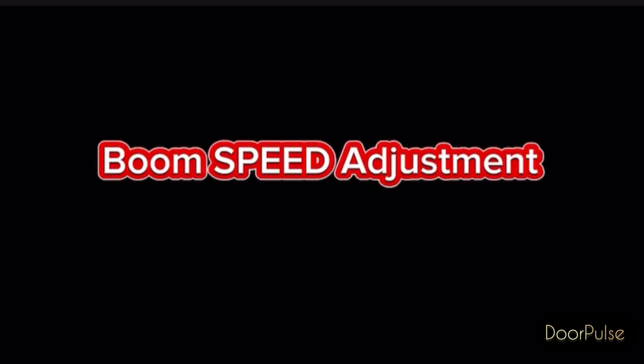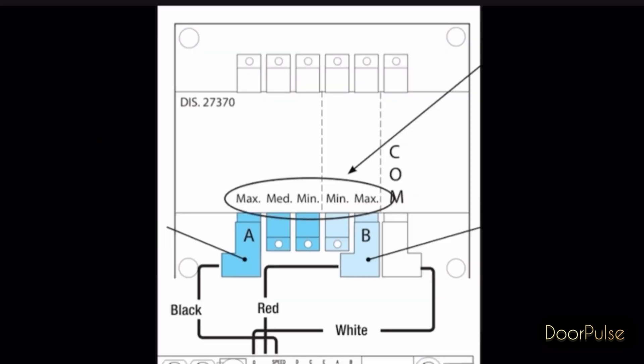Boom speed adjustment: to regulate the travel speed, move fast in A on minimum, medium or maximum. To adjust the slow down speed, move fast in B on minimum or maximum.